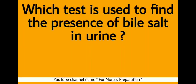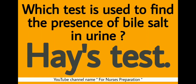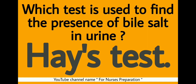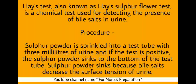Which test is used to find the presence of bile salt in urine? The right answer is the Hay test. The Hay test, also known as the Hay Sulphur Flour Test, is a chemical test used for detecting the presence of bile salt in urine.